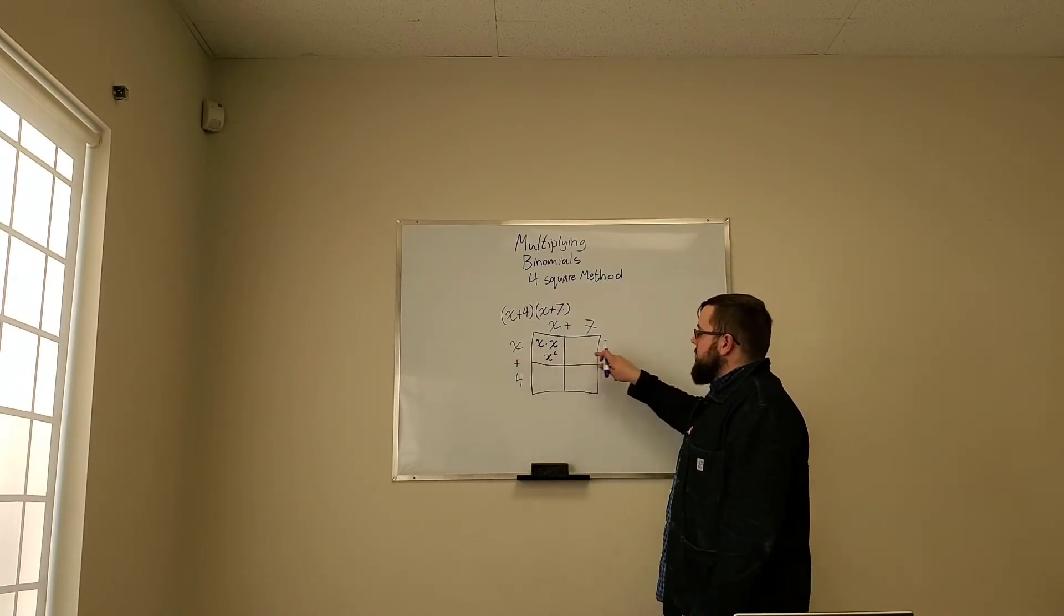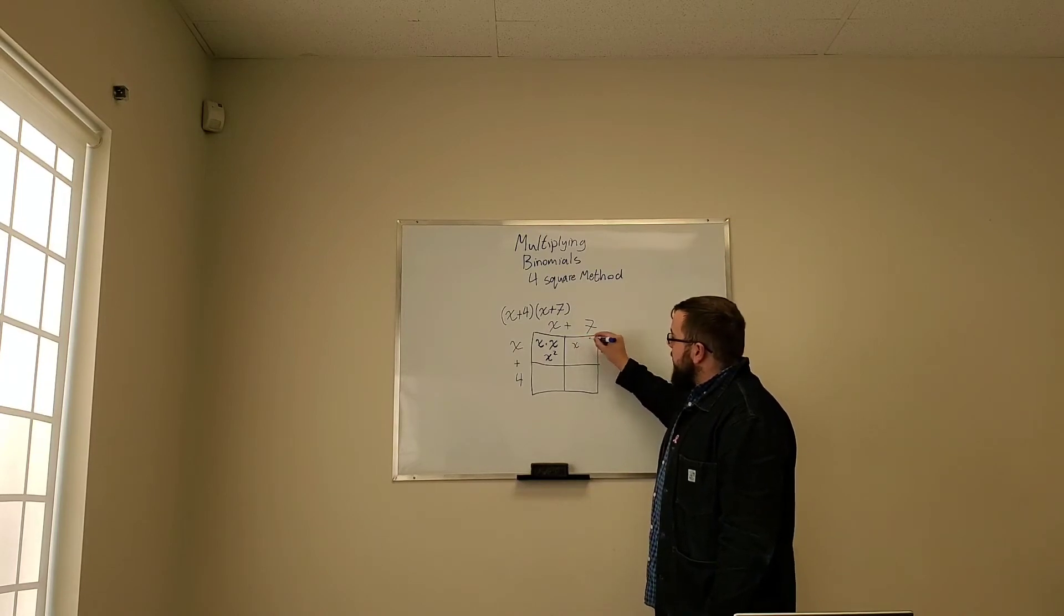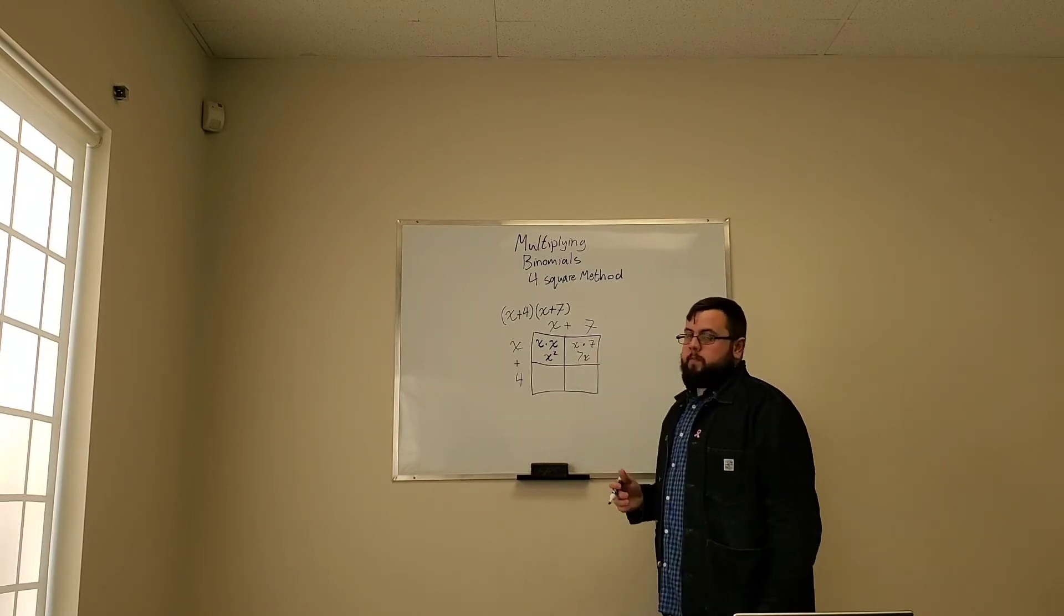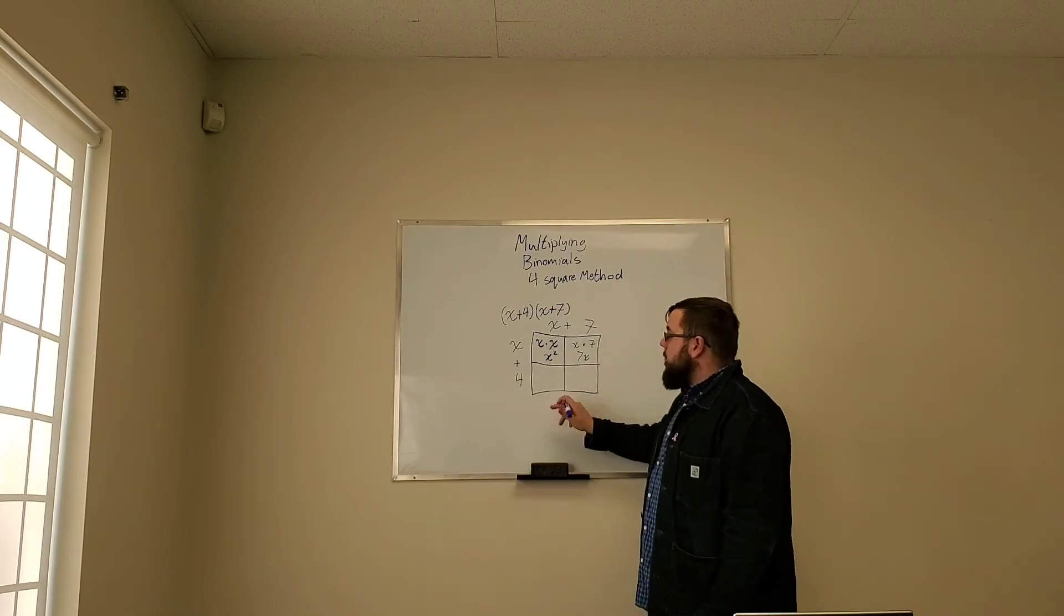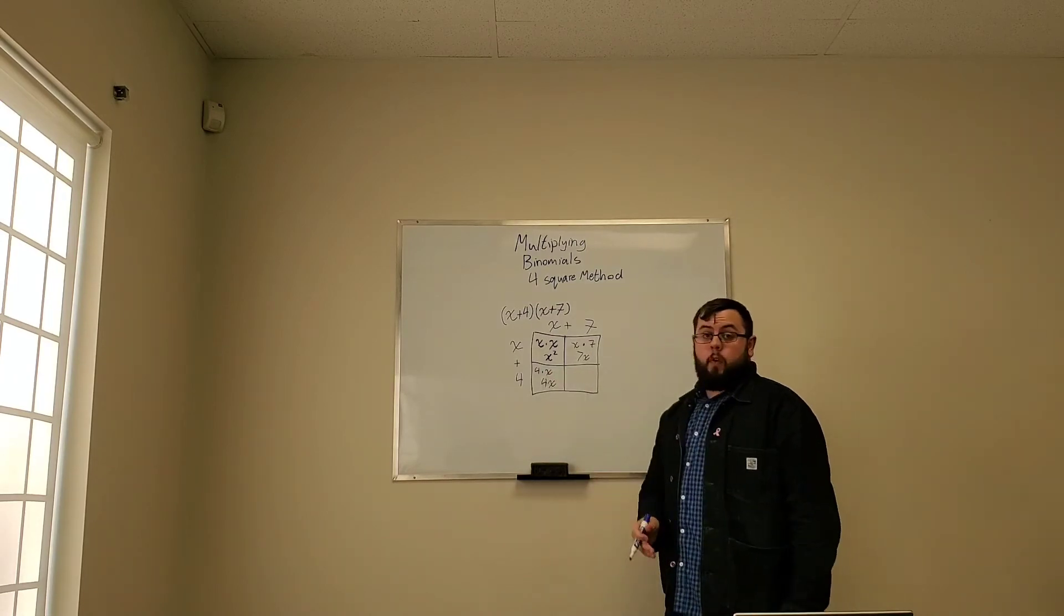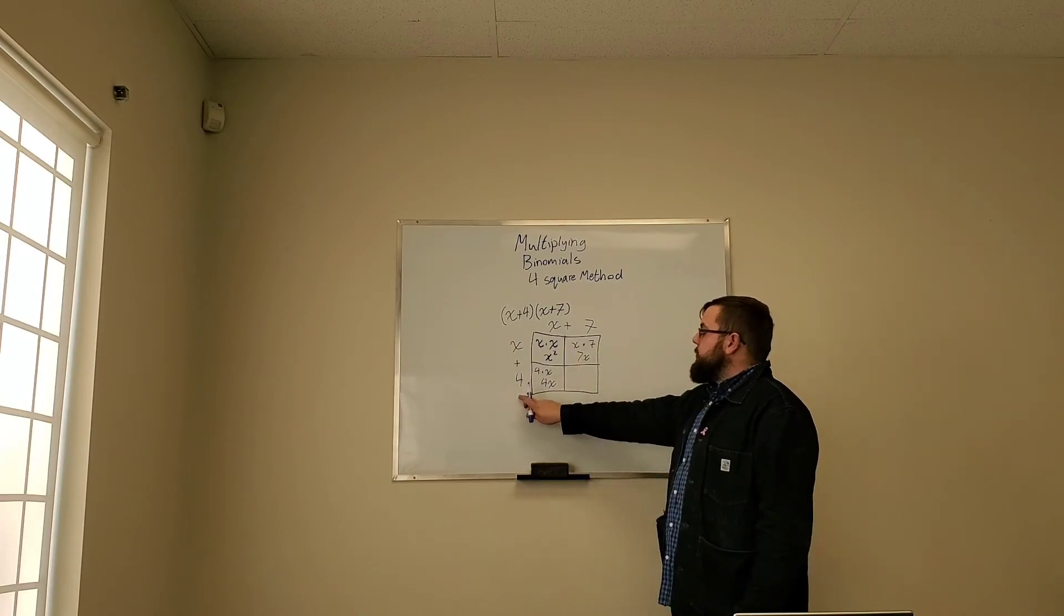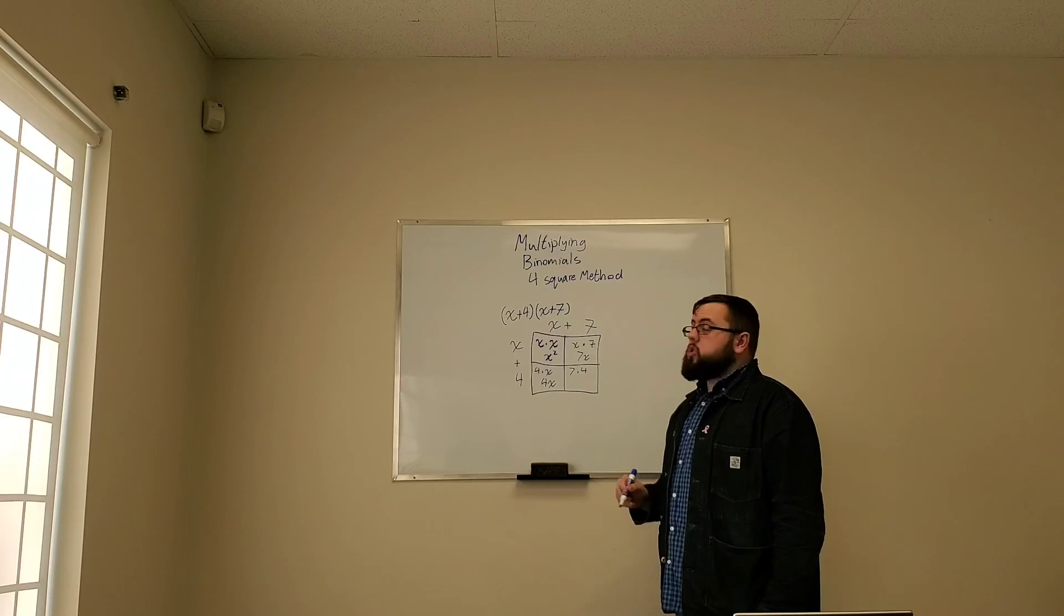And then we'll continue along here. Now we are in the top right. We have x times 7, which is 7x. Then we go down here. This is our four-row, x column. Four times x gives us 4x. And then we have 7 times 4, which is 28.